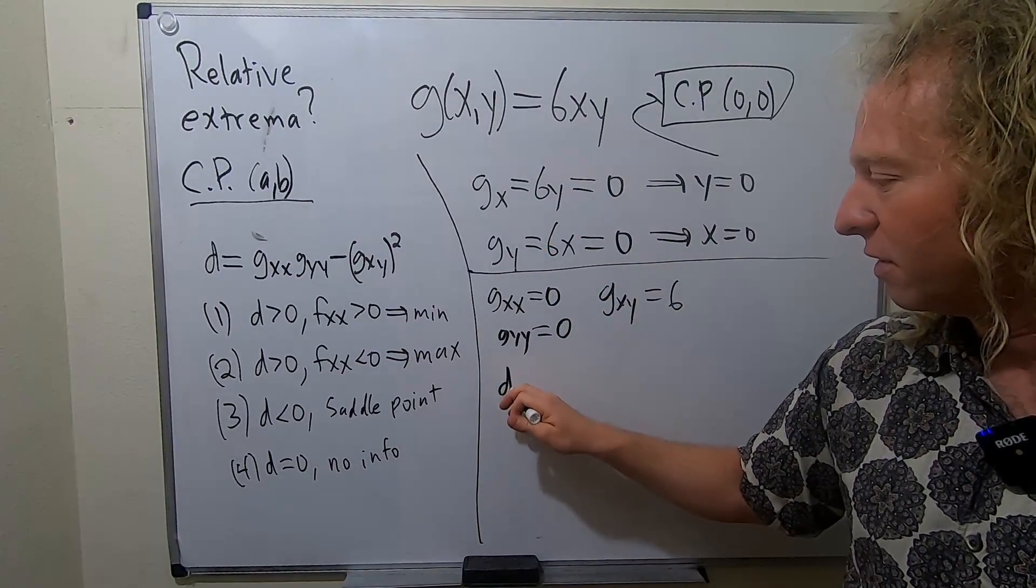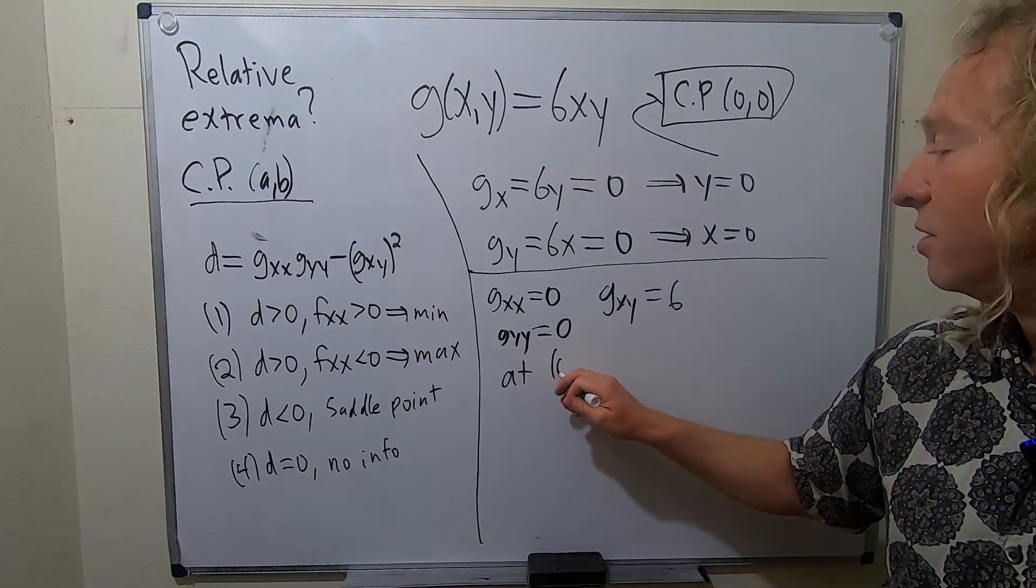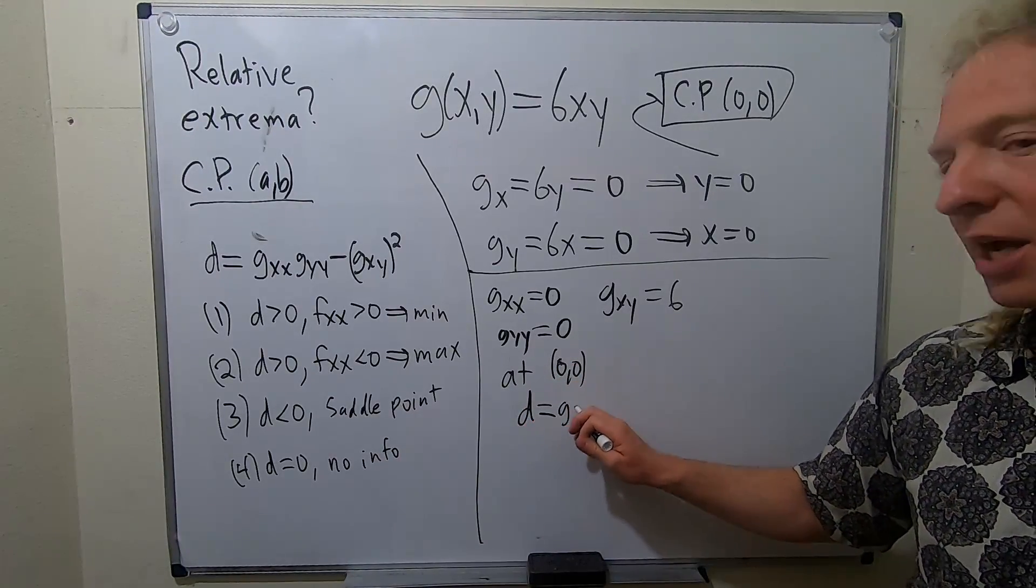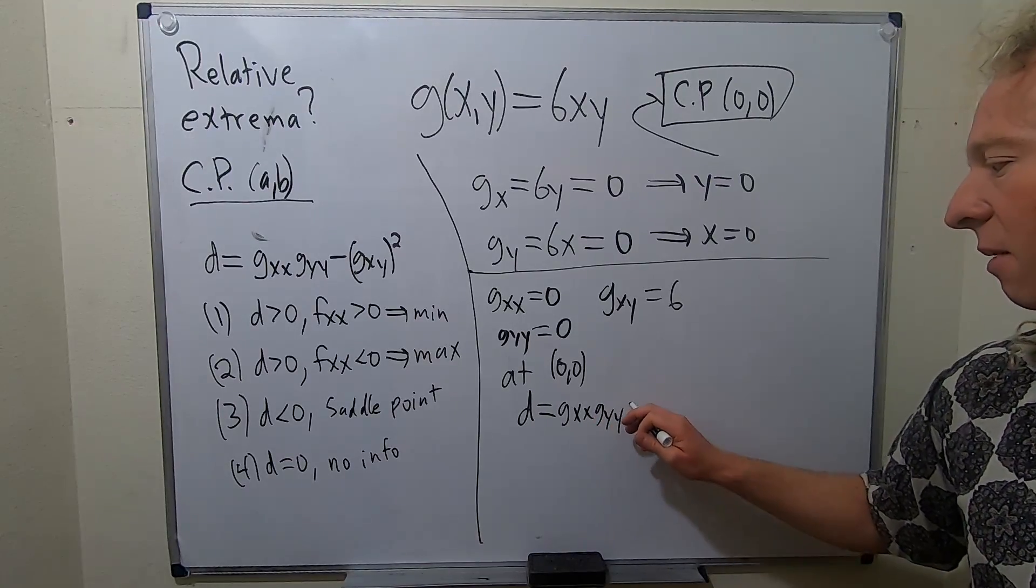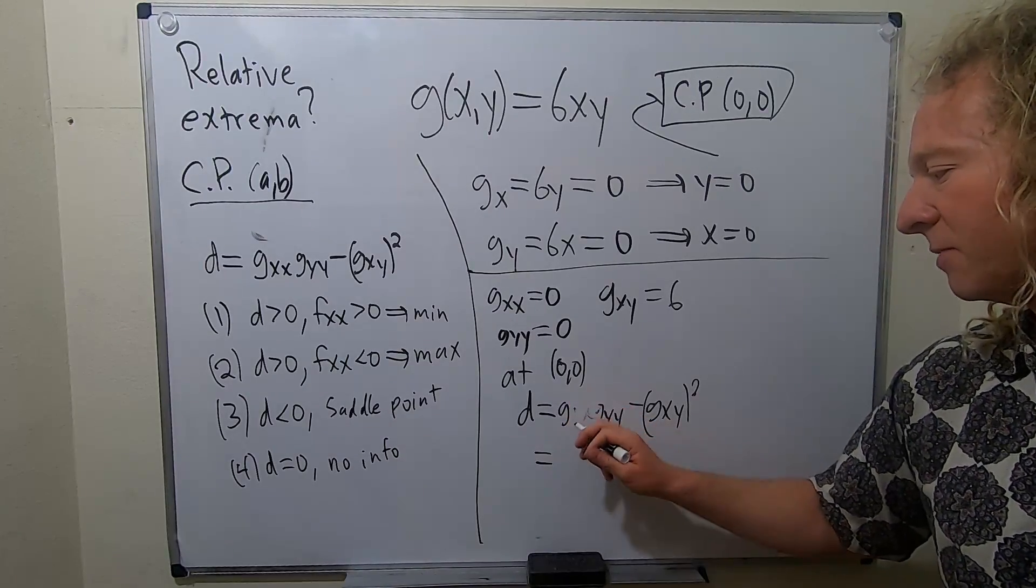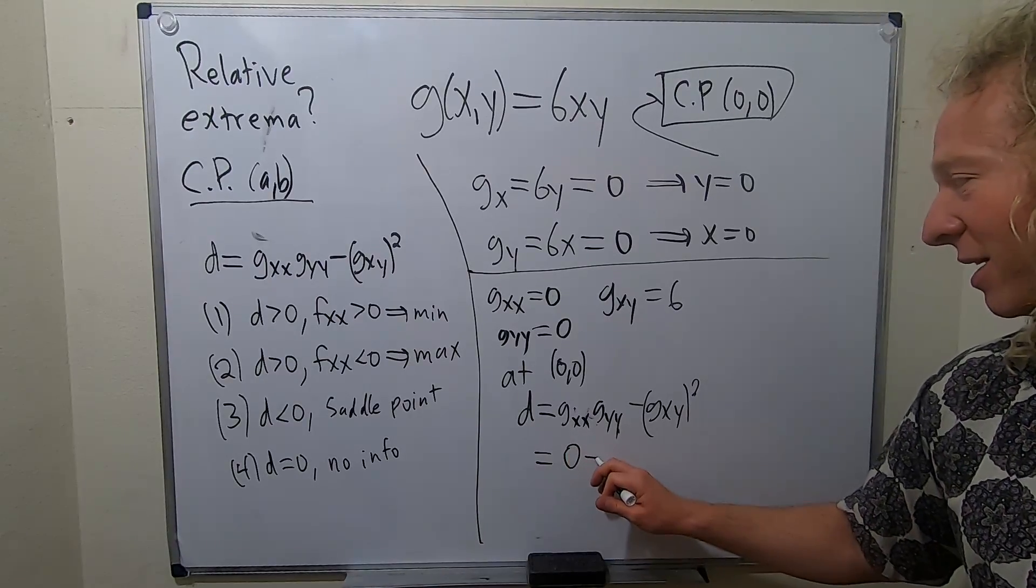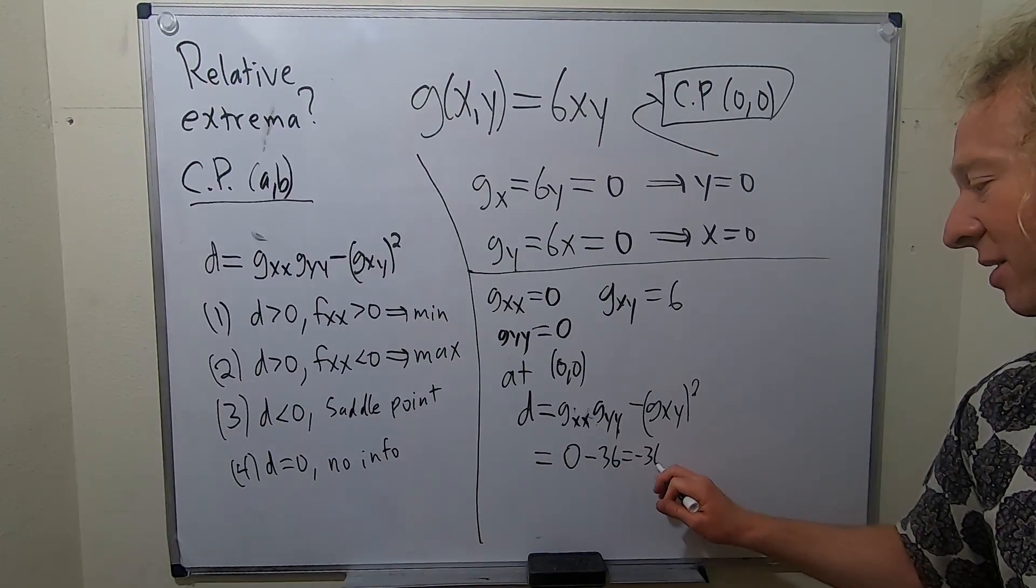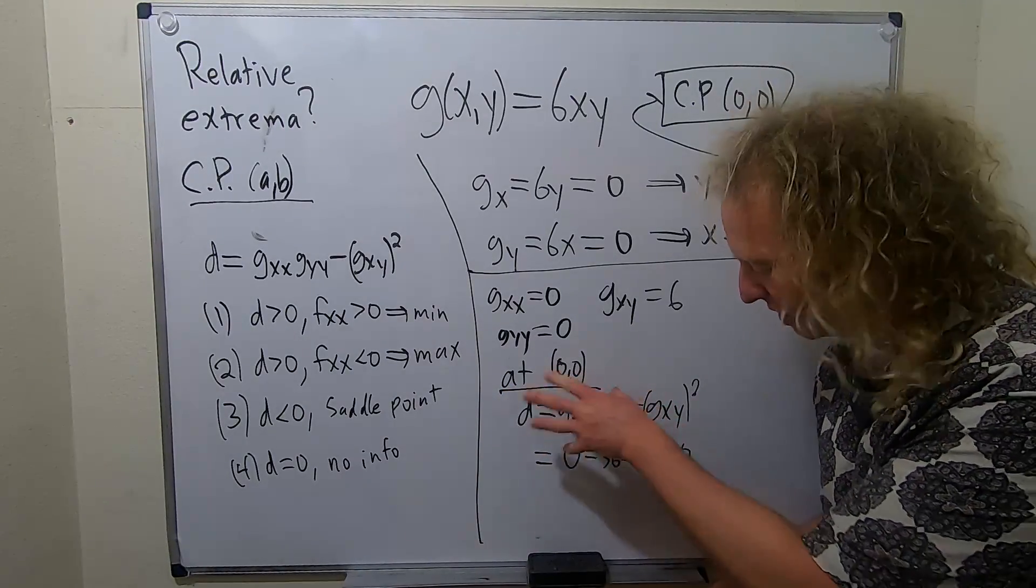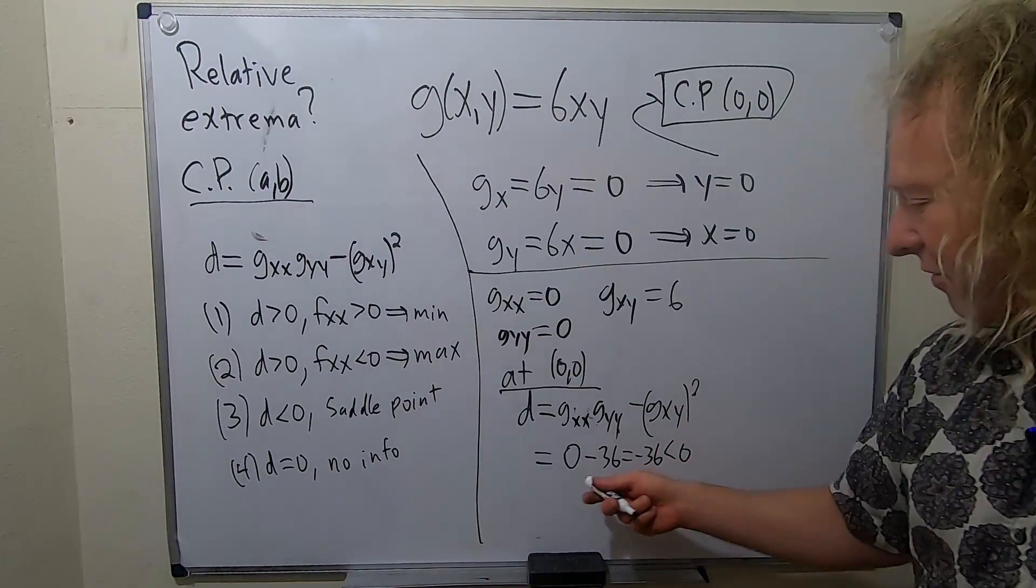So now let's look at D. So let me specify that we're evaluating at our critical point. So at zero, zero, D is equal to GXX, GYY, minus GXY squared. So this is going to be zero minus 36. So this is minus 36. That's less than zero. So at our critical point, it's always negative 36, but sometimes you can plug it in and things will change. There's no X's and Y's here, so it's negative. So we have D less than zero.